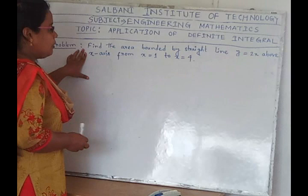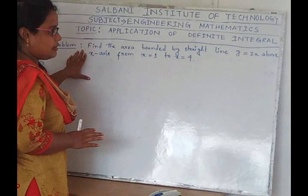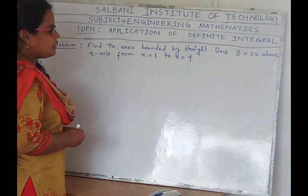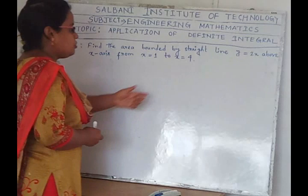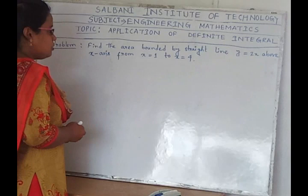For this we take a problem. The problem is: find the area bounded by the straight line y equals 2x, above the x-axis, from x equals 1 to x equals 4. x equals 1 is a straight line parallel to the y-axis, and x equals 4 is another straight line also parallel to the y-axis.